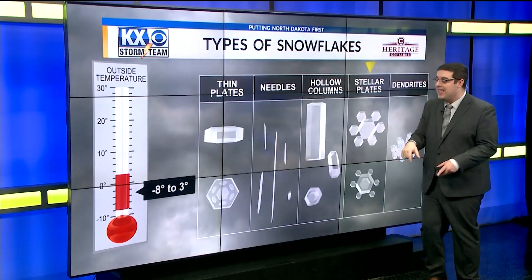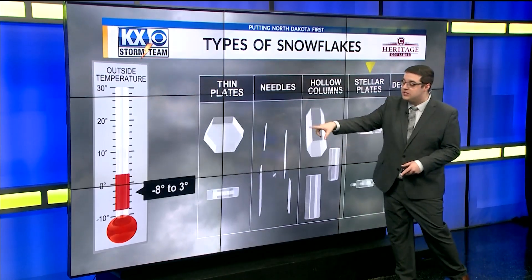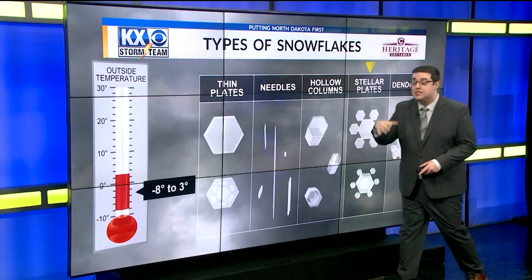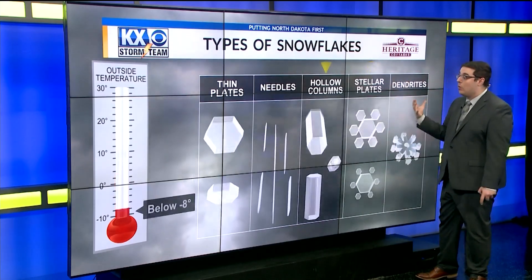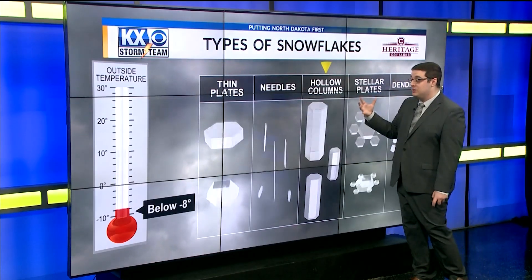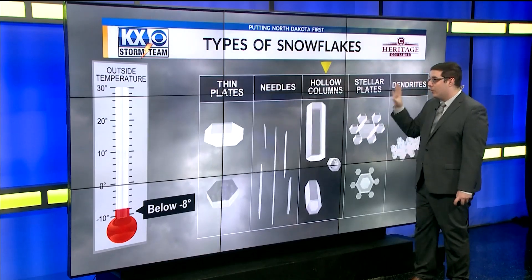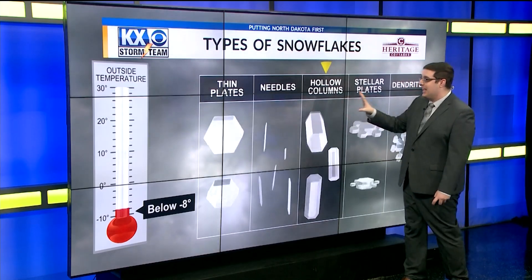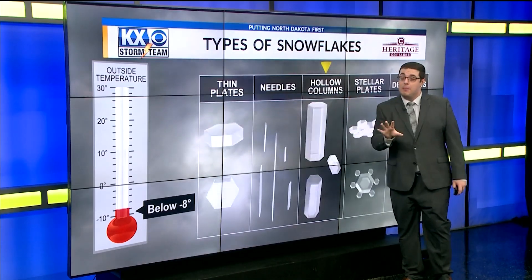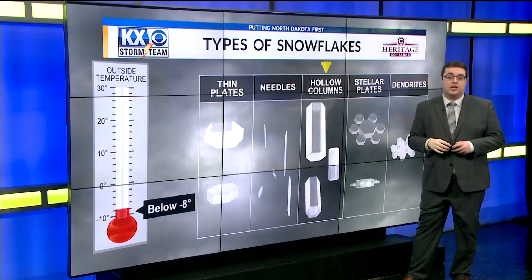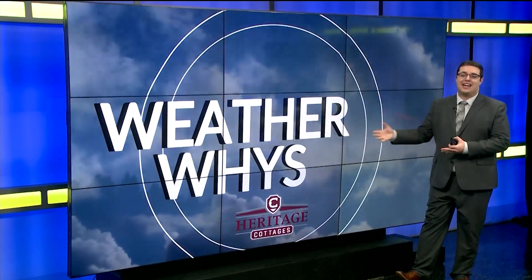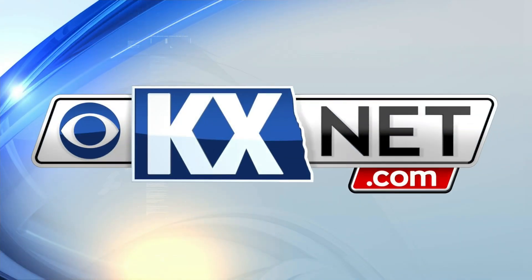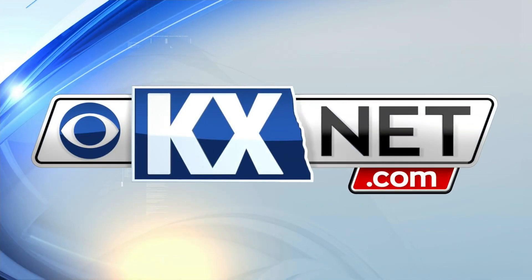Dropping temperatures even more — especially here in North Dakota — at 8 below zero to 3 degrees above zero, we get stellar plates once again. And once we get below 8 below zero, that's where we form right back into hollow columns. Remember to send in your questions so I can answer them weekly on Weather Wise — you can do so by heading over to kxnet.com.